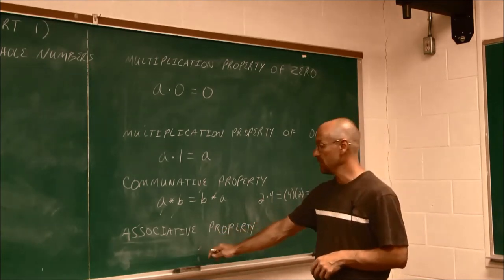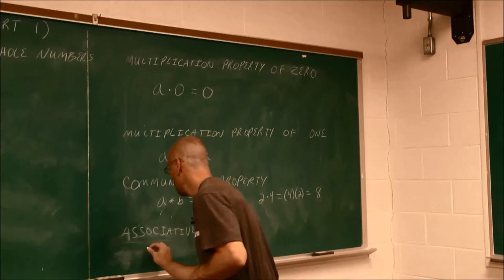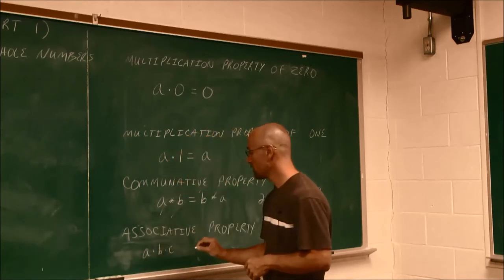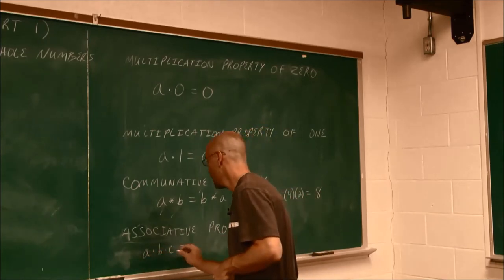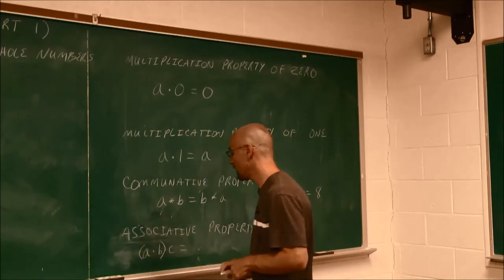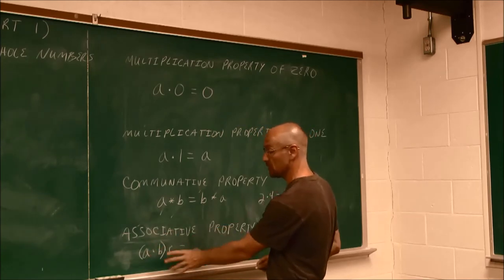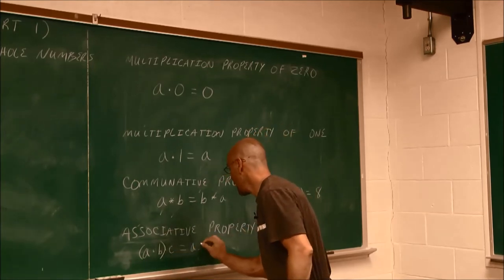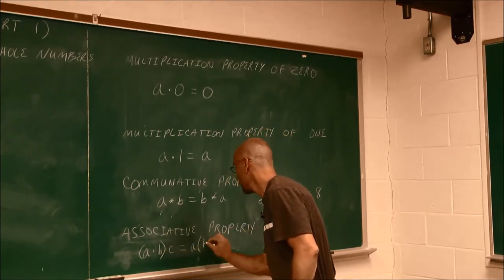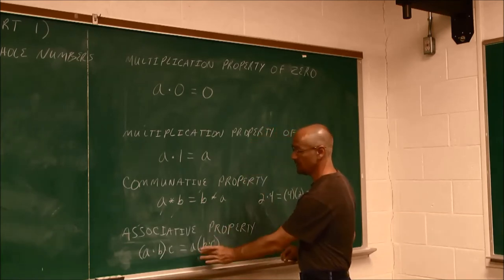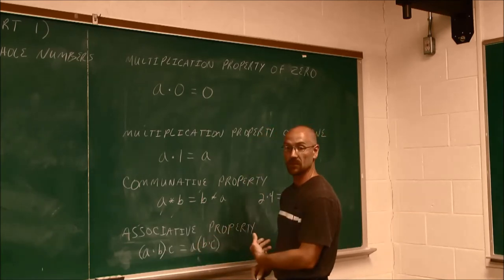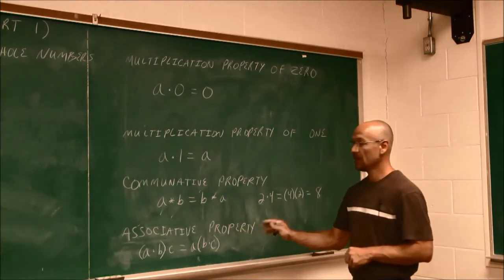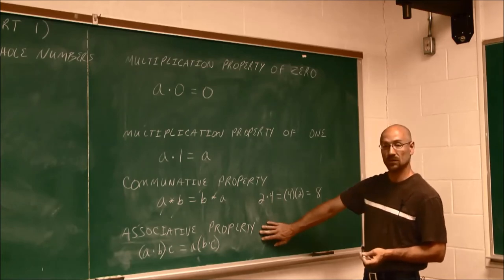The next is the associative property. The associative property is when we have more than two values that are being multiplied together, a, b, and c. Now, we could multiply the first two values together, and now I introduce the parentheses. Still means the same thing, a times b is all multiplied by c. Or I could say a times b times c. Again, the order that I multiply them doesn't matter. I could even say a times c times b in that order, and I'll still get the same value. That is the associative property.